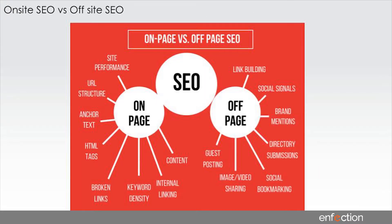SEO can be divided into two key areas: on-site and off-page. On-site covers your user experience, URL structure, speed, and other on-page development components. Off-page is about link building — how many other people are connecting to your site for your content. Even your social media activity and links back to your site also have a part in your SEO.